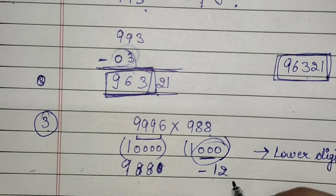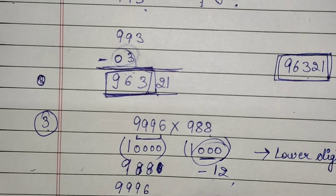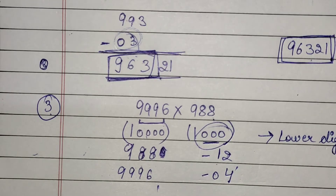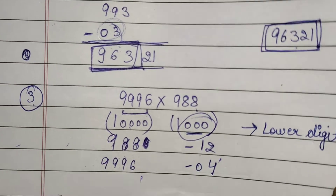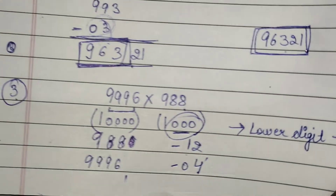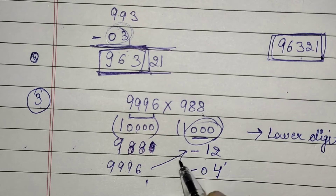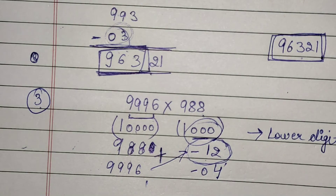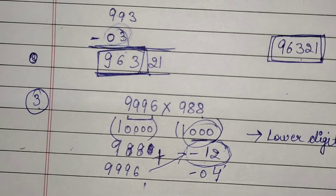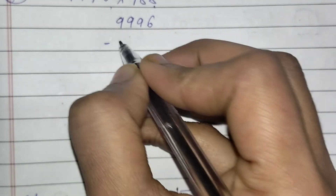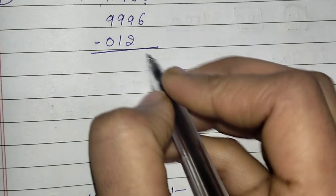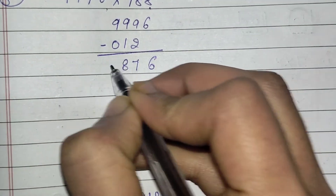9996 is how much lesser than 10000? It is lesser by 0004. The lower digit count is 3, so while doing addition you have to convert 12 to a 3-digit number: write 012. Now do the subtraction — because the sign is negative — and you get 9984 as the first part. The second part is 12 into 4 equals 48. So your answer is 984 followed by 48.